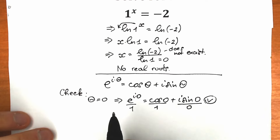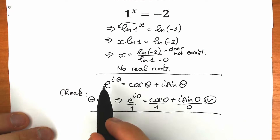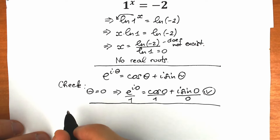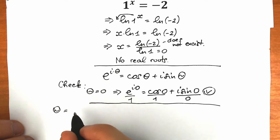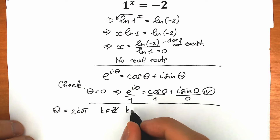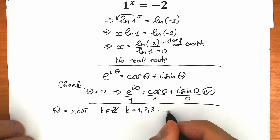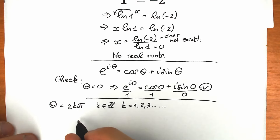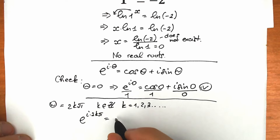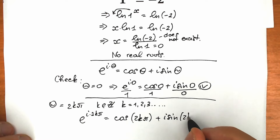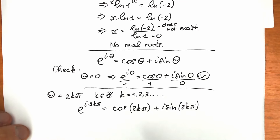Now I'm going to plug in a substitution. Our substitution is theta equals 2kπ, where k is an integer — k can be 1, 2, 3, and so on. So instead of theta, we plug in 2kπ. As a result: e to the power i times 2kπ equals cosine 2kπ plus i times sine 2kπ.